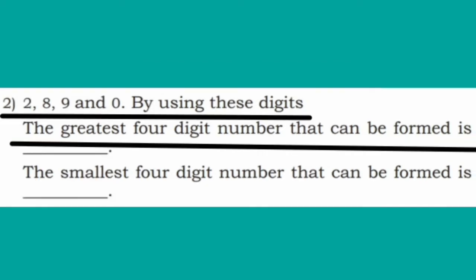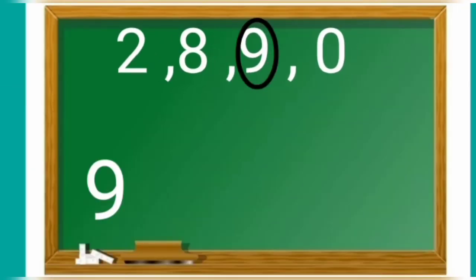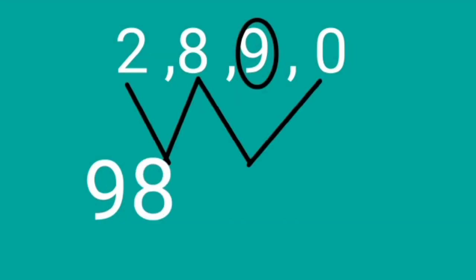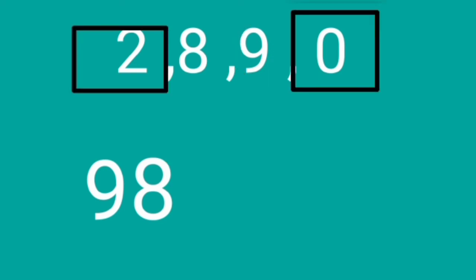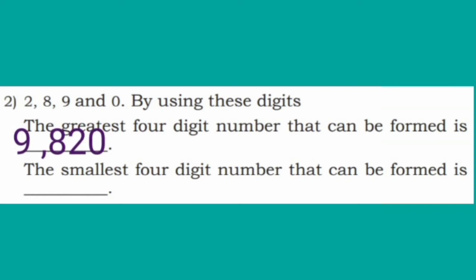Second question: using the digits 2, 8, 9 and 0, the greatest 4-digit number that can be formed is: observe the numbers children. Among these, 9 is the greatest. Among the remaining 3 digits, 8 is the greatest. Among 2 and 0, 2 is greater, and the last number is 0. So the answer is 9,820. In the same way, arranging the smallest 4-digit number gives 2,089.